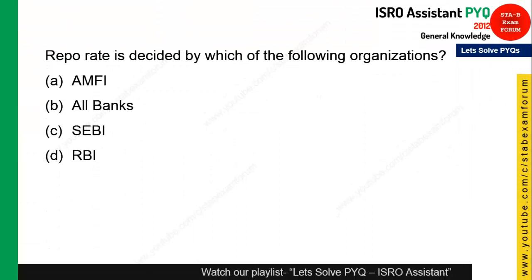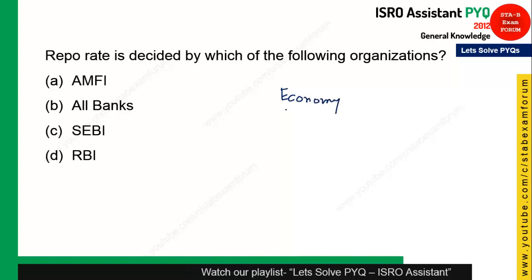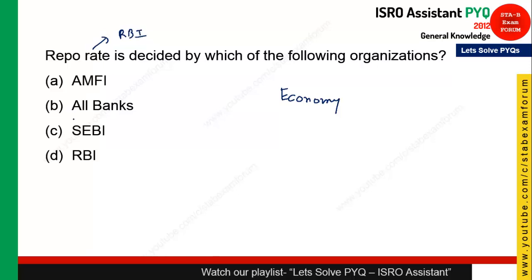The next question is from economy: the repo rate is the rate decided by which organization? The repo rate is the rate or percentage at which RBI gives loans to all banks. So RBI is the correct answer — option D.